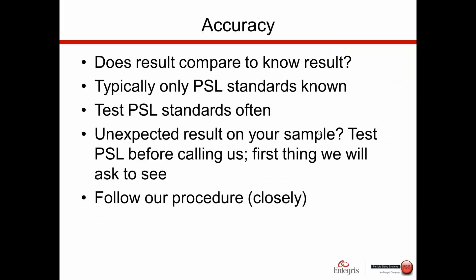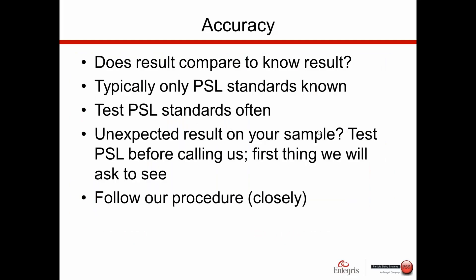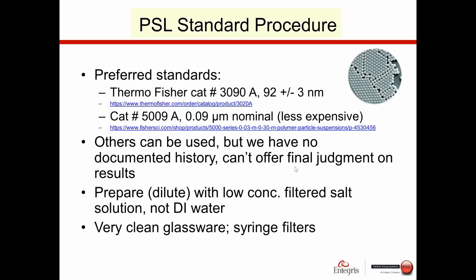Going back to accuracy — does our result compare to a known result? The known result is a tricky business in dynamic light scattering, and the search for absolute truth is best left to philosophers, not people doing particle size measurements. The only way to get a leg in reality for accuracy is to take a known sample — a polystyrene latex sample — and ask: do we get the expected results? If results matter, this should be tested fairly frequently.